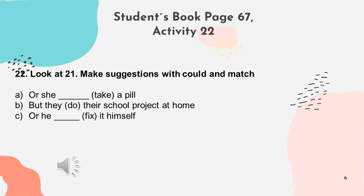Then letter B, for example: 'But they could do their school project at home.' What do you think this suggestion is for in activity 21? Number five, right? About Teresa and her sister. Very good.